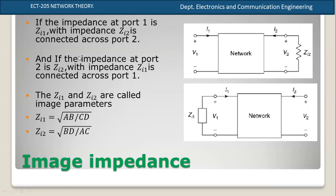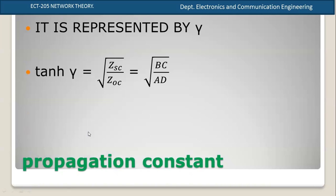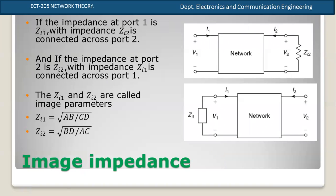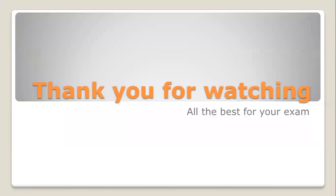In terms of H parameters, this is T. The propagation constant is gamma. TANH(gamma) is equal to the square root of ZSC divided by ZOC, which equals the square root of BC divided by AD. This equation defines the propagation constant. This is the fifth module in this channel.